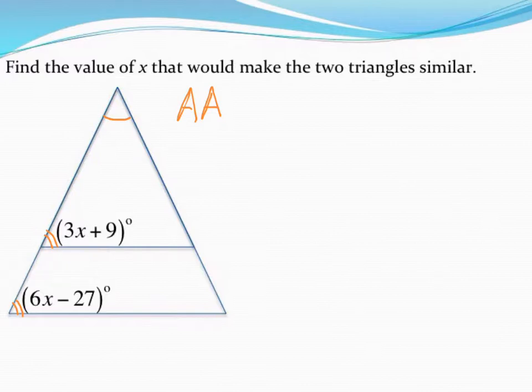Based on that, we can use that information to write our equation. 3x plus 9, that angle must be equal to the other one, 6x minus 27. So we can use that to determine the equation we need to solve algebraically to find our value of x.